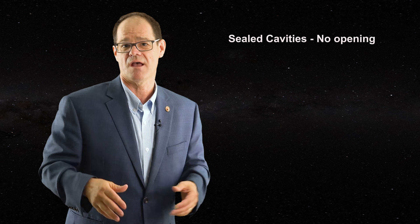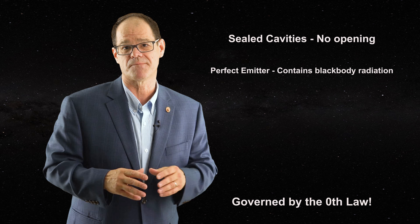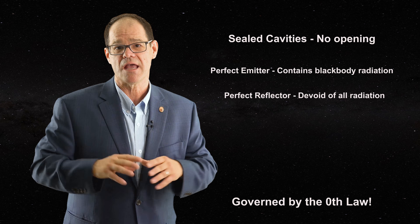If the cavity is entirely made from a perfect emitter, it will contain black body radiation. If it is made from a perfect reflector, it will be devoid of all radiation.